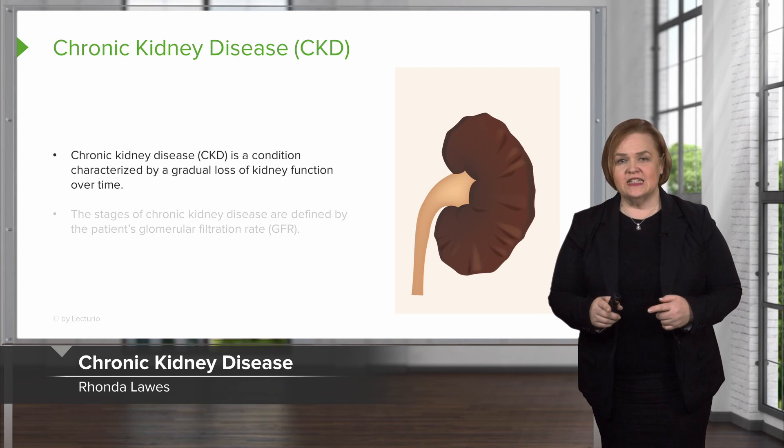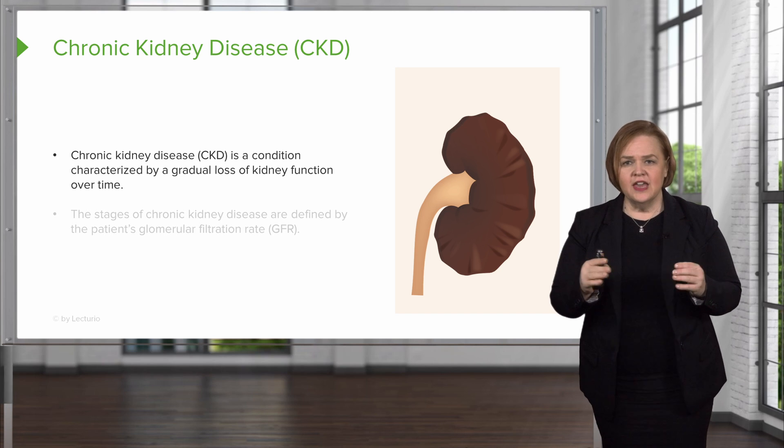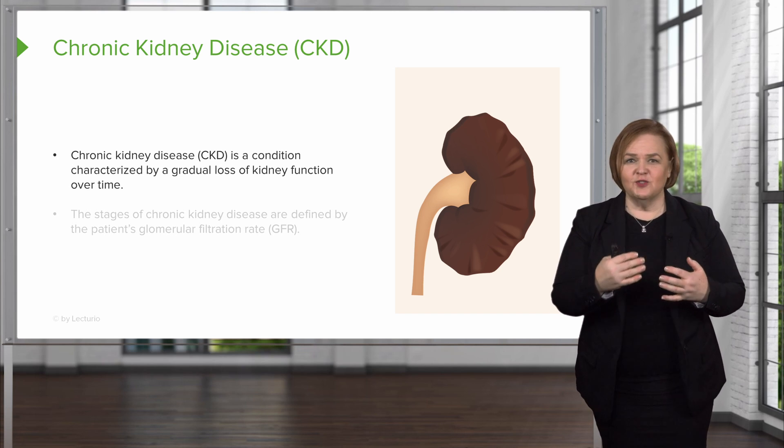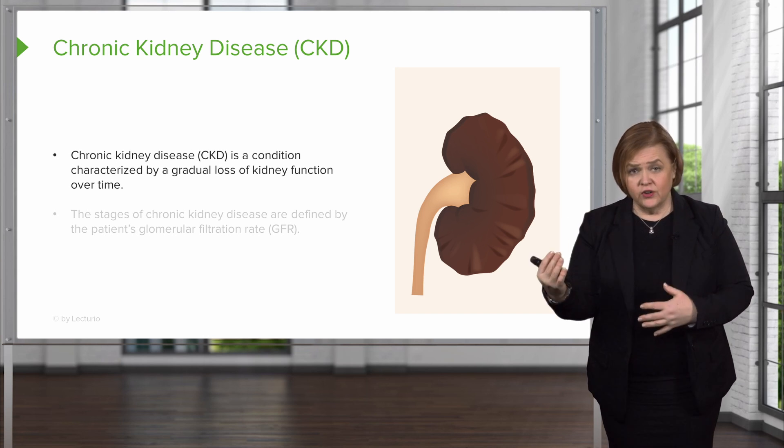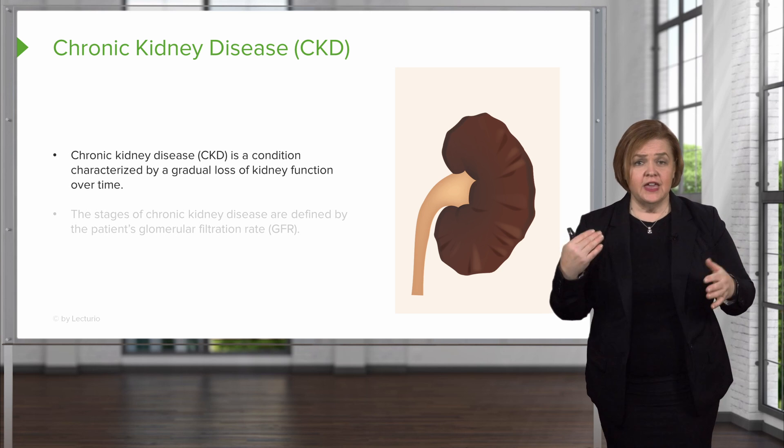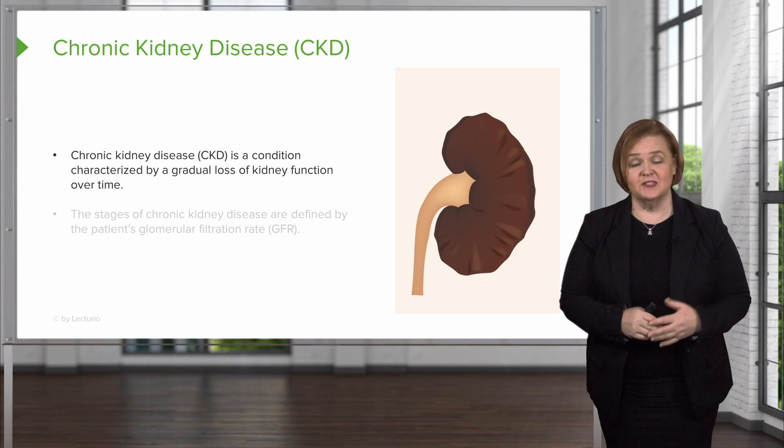Now this is chronic kidney disease, and the reason you want to recognize acute kidney injury is because we want to catch it, we want to intervene. Just like nurses did for me - they caught that, they notified the healthcare provider, we got IV fluids going and I resolved just fine. I don't have chronic kidney disease, but if that had progressed to chronic kidney disease, this is what my life would have been like.